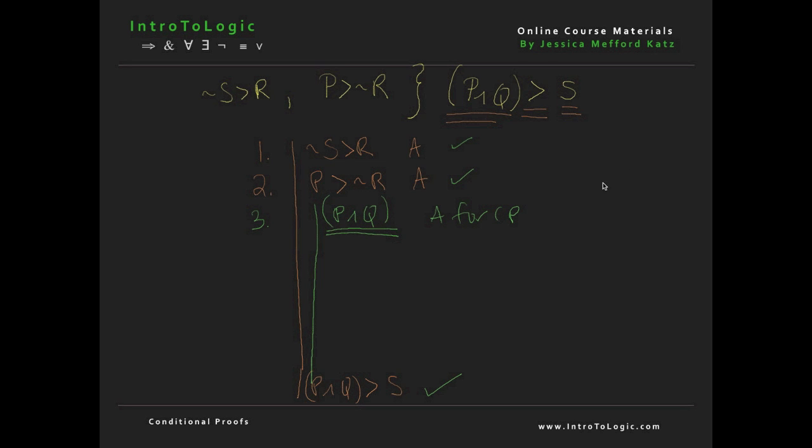And so we're doing something very similar when we do conditional proofs. We assume, and we think about, what if I had this other assumption, which in this case is going to be P and Q, and then you think about, if I had that other thing, then I could derive this other thing, which in this case is the consequent S. Okay, so given that analogy, let's try to make sense of how to do this problem.